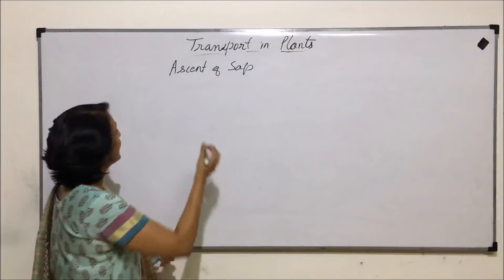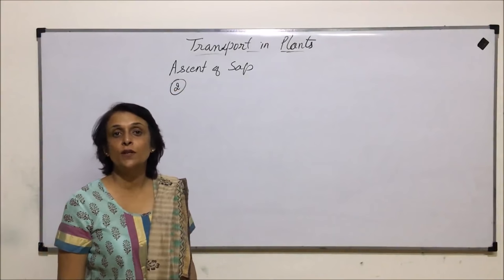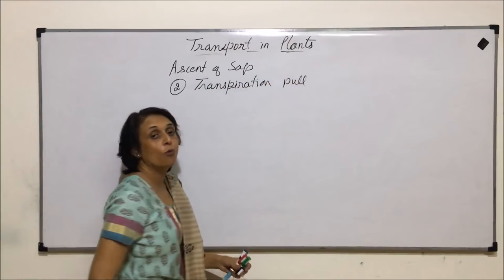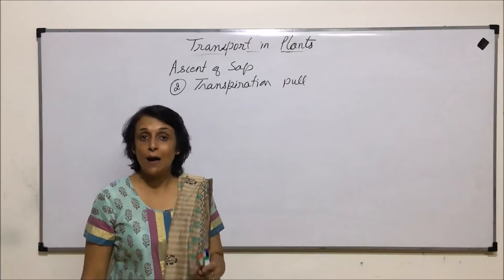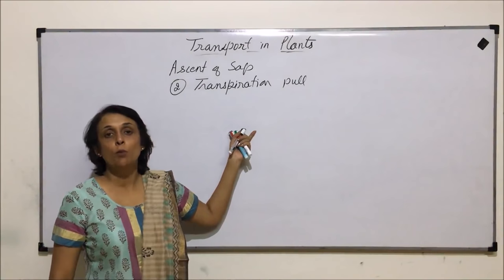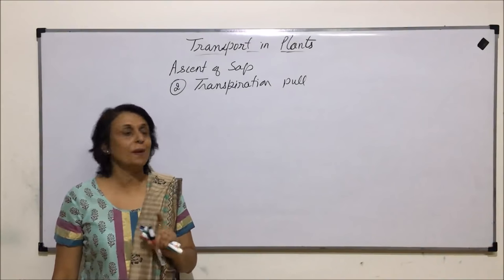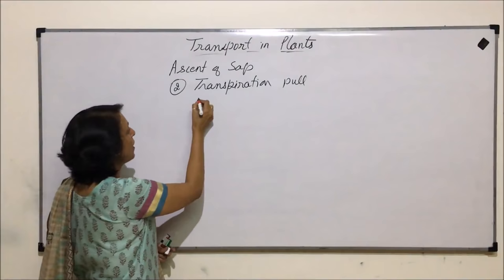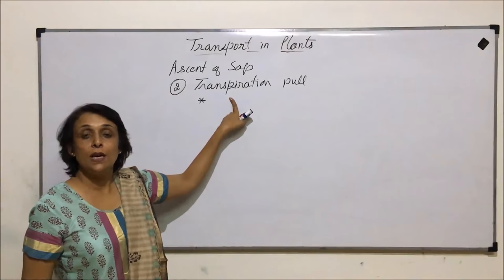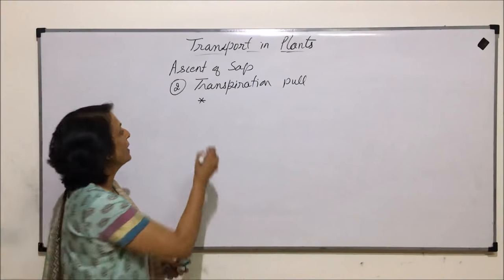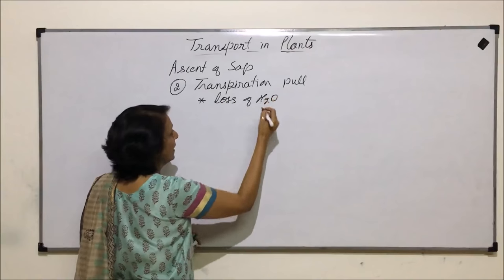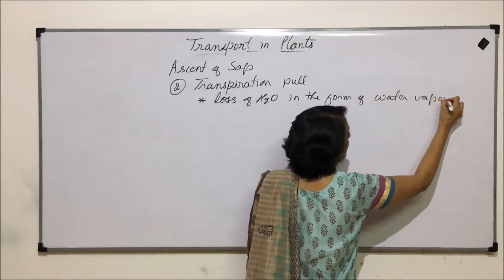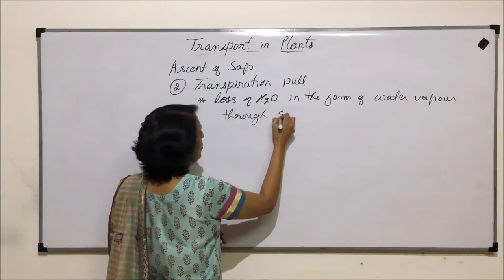After root pressure, the next important force responsible for ascent of sap is transpiration pull. This is the most important force with which water is going to move up, and it is more than enough to pull water up to the topmost level of the leaf even in the tallest plant. Transpiration is the loss of water in the form of water vapor through structures called stomata.